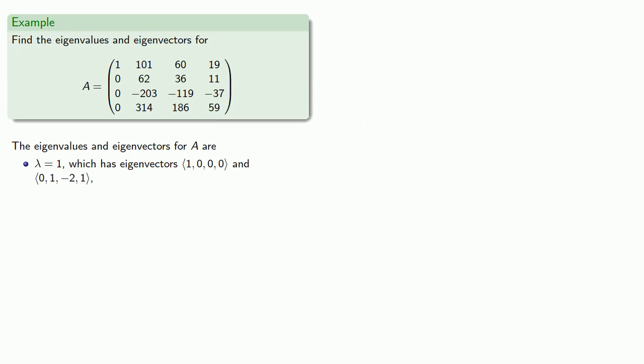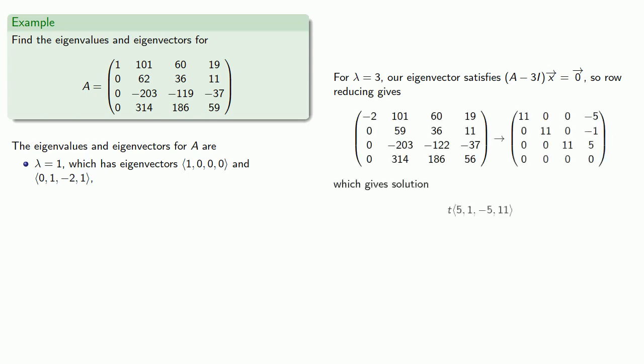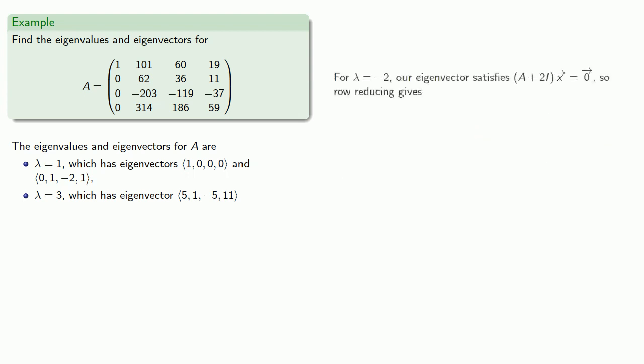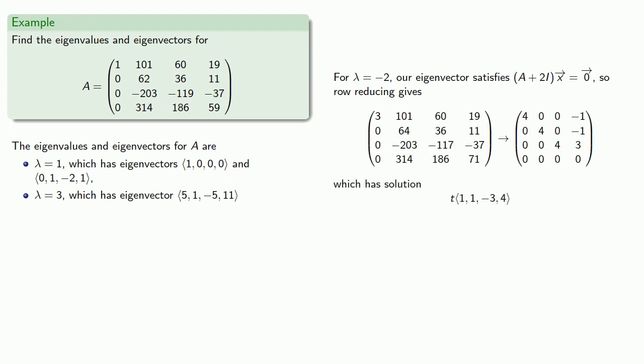And as before, once we know the eigenvalues, we can find the eigenvectors. So for lambda equals 3, our eigenvector satisfies (A minus 3I) applied to x gives us the zero vector. So row reducing gives us a corresponding eigenvector. And similarly, for lambda equals minus 2, our eigenvector satisfies (A plus 2I) applied to x gives us the zero vector. So again, row reducing gives us the eigenvector.